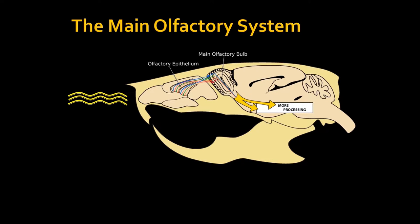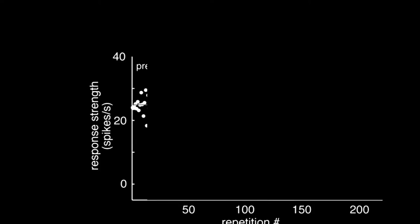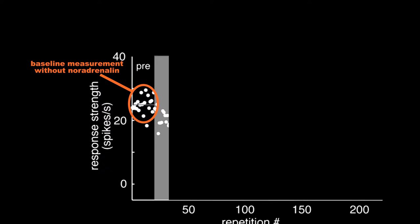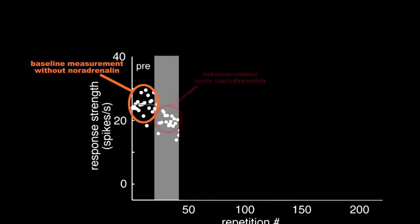These mitral cells send the signal further to the cortex. When my advisor was a postdoc, he found that noradrenaline release during presentation of an odor would change the response of these neurons to that odor — that's basically learning. He did electrophysiology in the main olfactory bulb from mitral cells, presenting an odor a couple of times to establish a baseline, then coupling odor stimulation with electrical stimulation of the noradrenaline-releasing area.